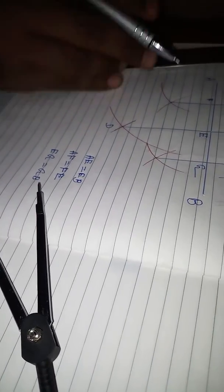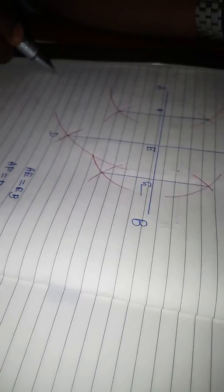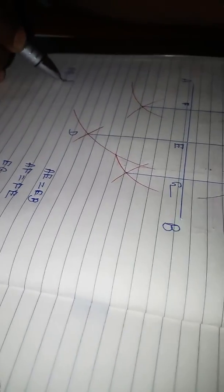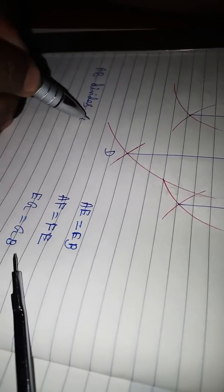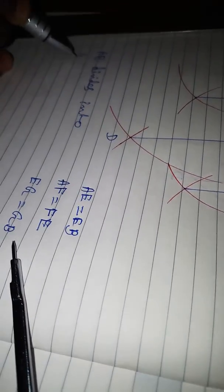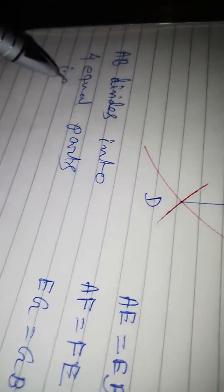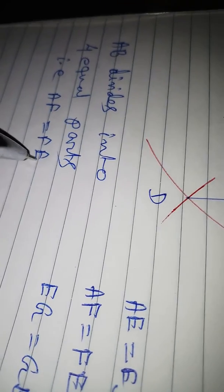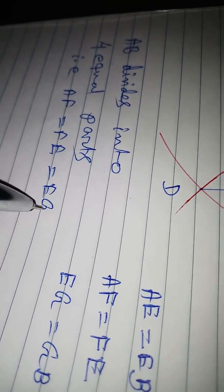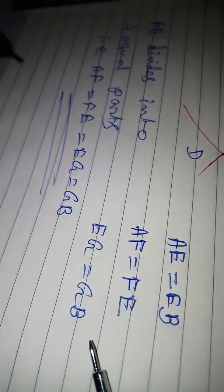So from here, we can say that AB is divided into four equal parts: AF is equal to FE, equal to EG, equal to GB. That is the answer.